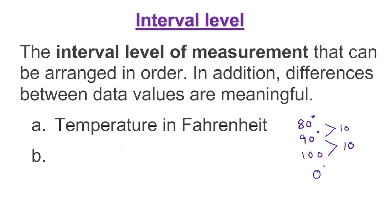Now if you have zero degrees Fahrenheit, that's not actually a true zero. Zero degrees Fahrenheit really means 32 degrees below the freezing level. So zero here has a reference meaning — it doesn't mean the absence of temperature. Therefore we cannot say zero is a natural starting point for Fahrenheit temperature.